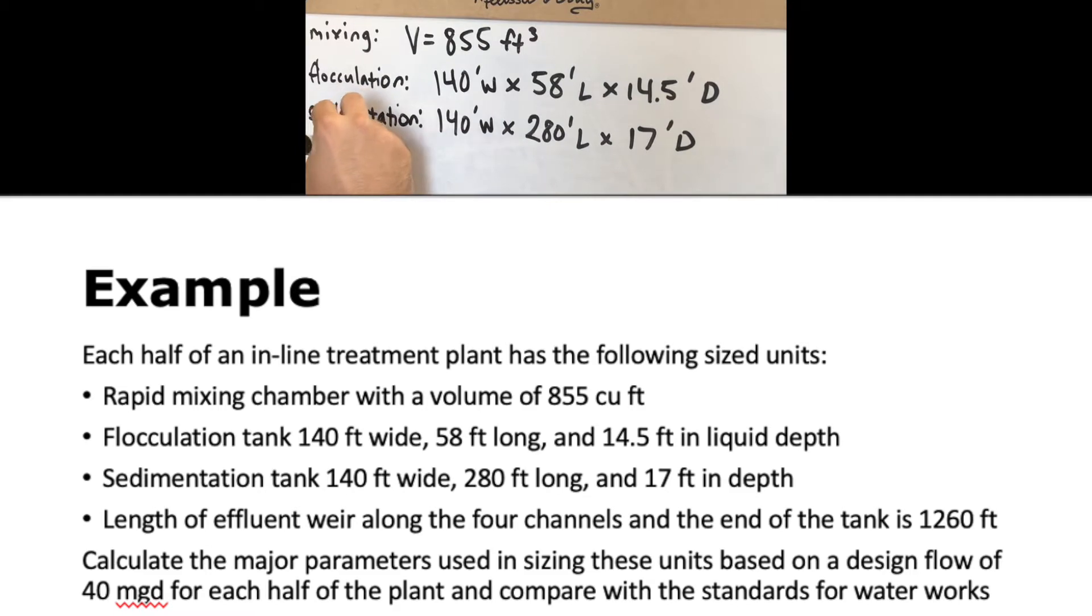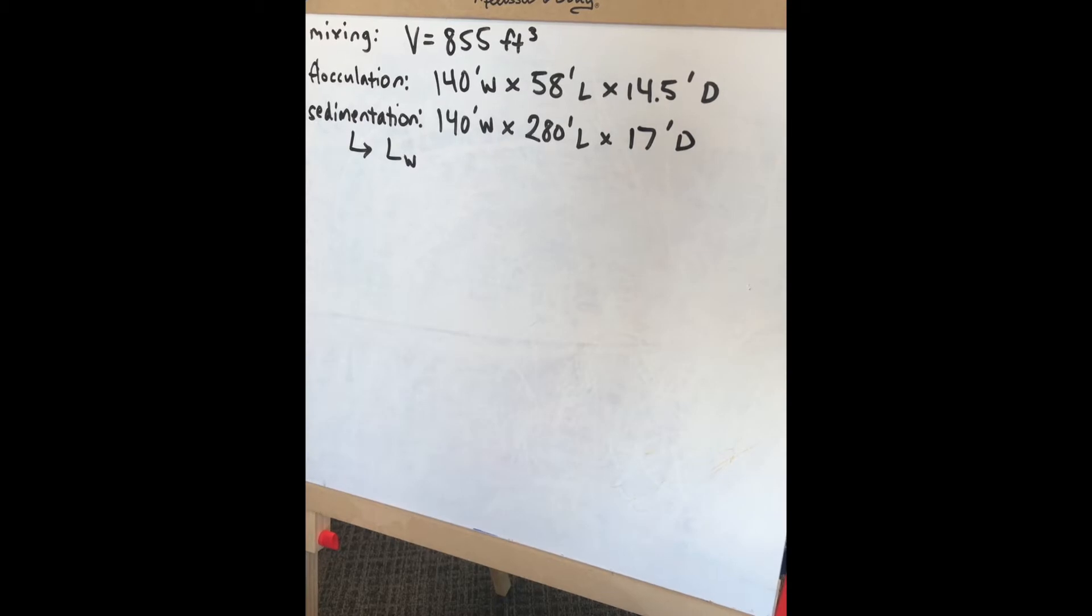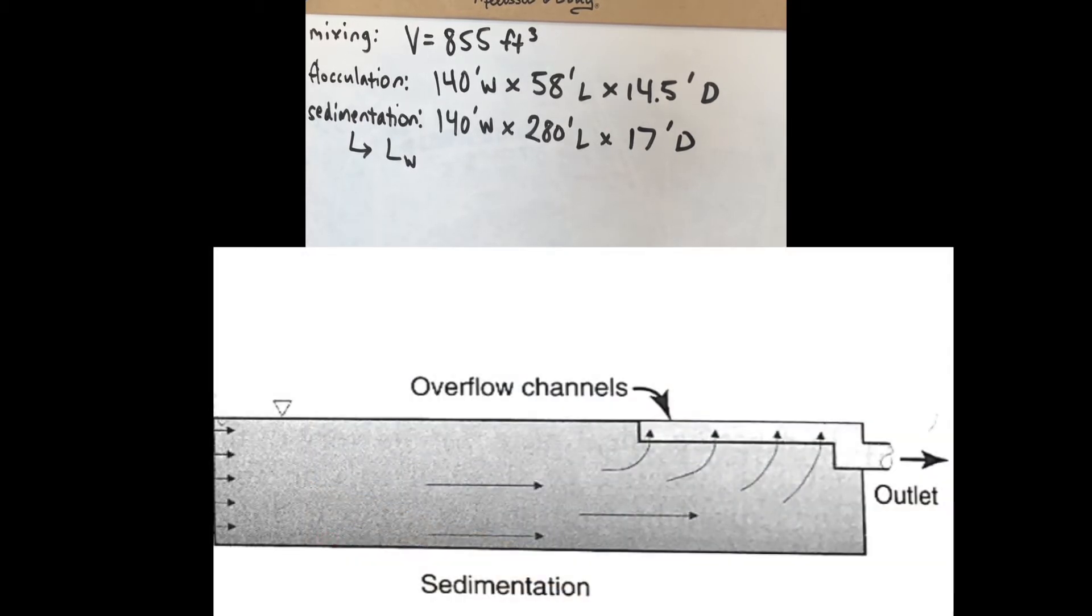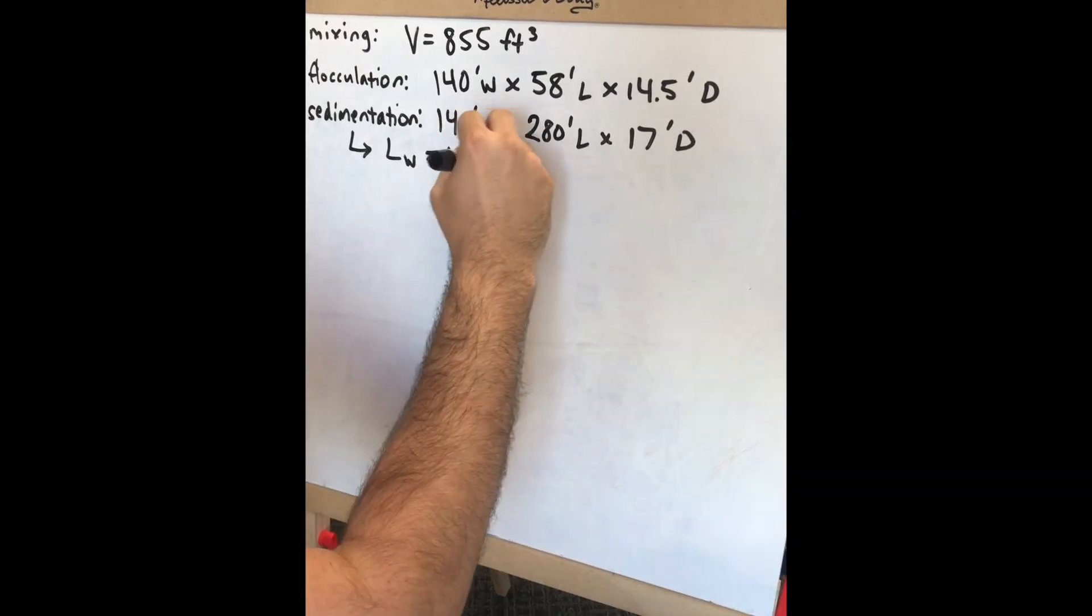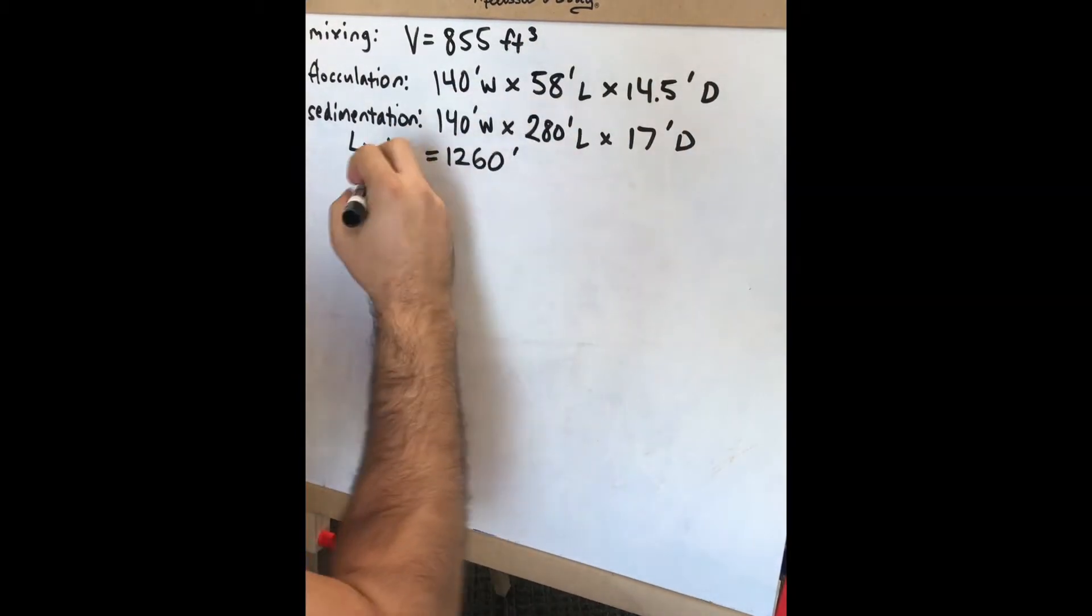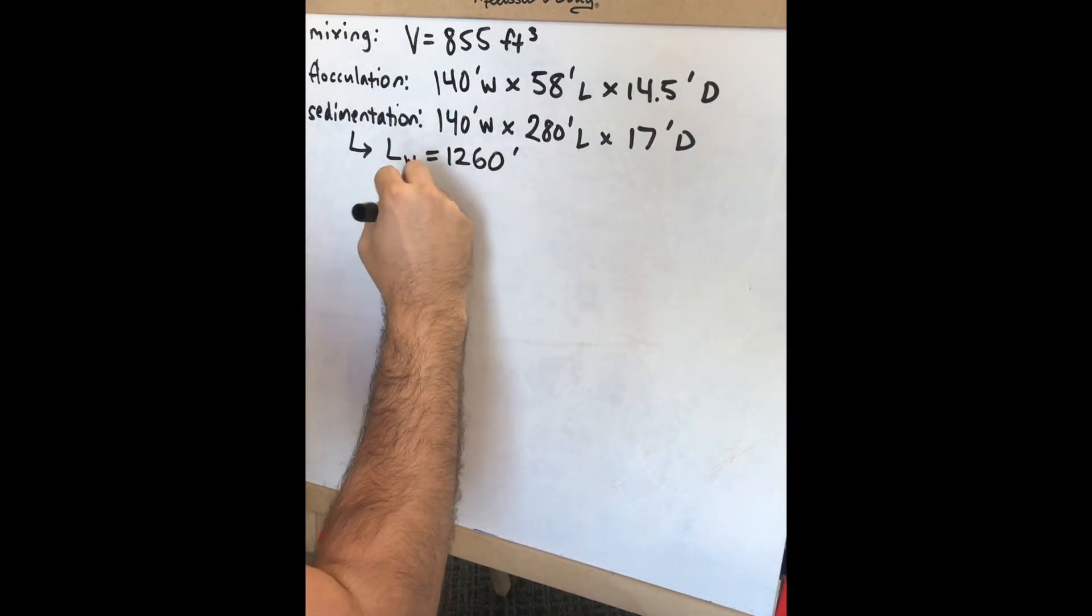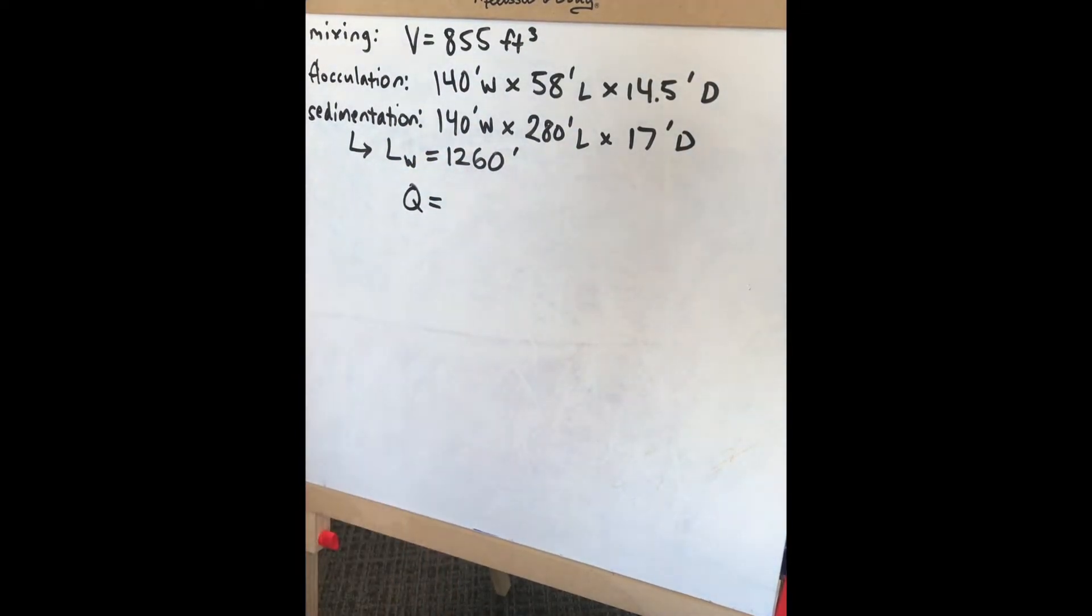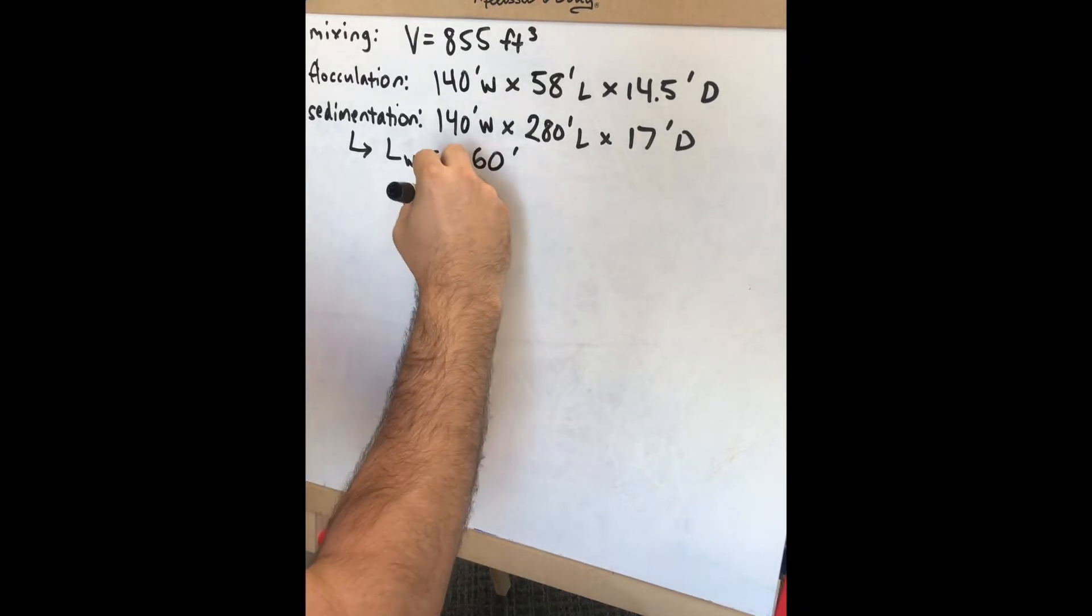For the sedimentation basin, the length of the effluent weir along the four channels at the end of the tank is 1260 feet. The design flow rate for the system is 40 million gallons per day.